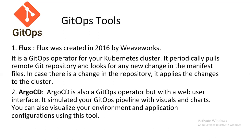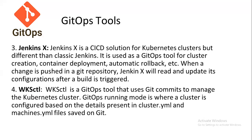Jenkins X is a CI/CD solution for Kubernetes clusters, different from classic Jenkins. It is used as a GitOps tool for cluster creation, container deployment, automatic rollback, and more. When a change is pushed to a Git repository, Jenkins X will read and update its configuration after a build trigger.